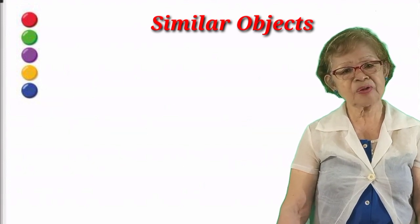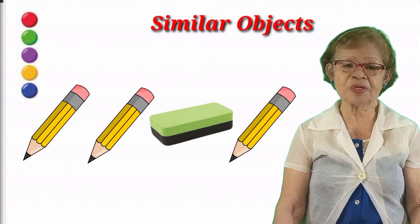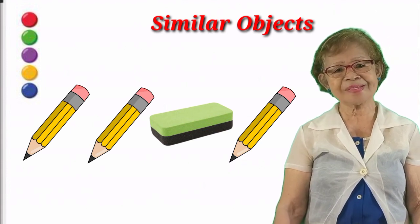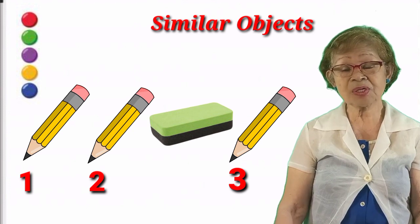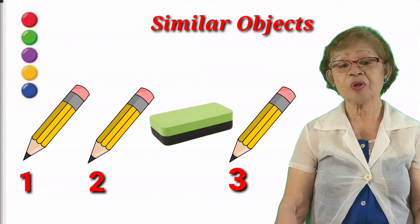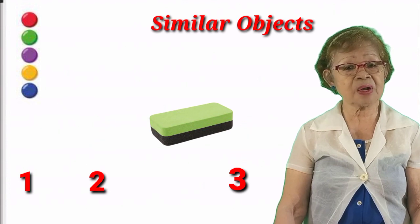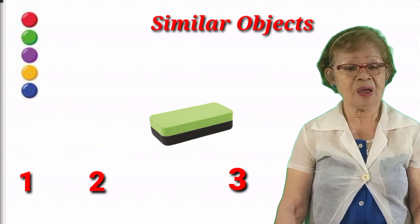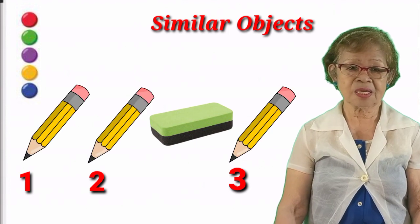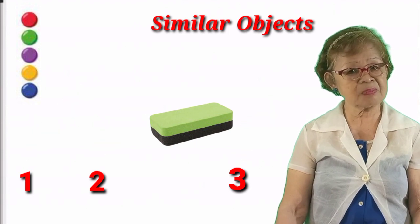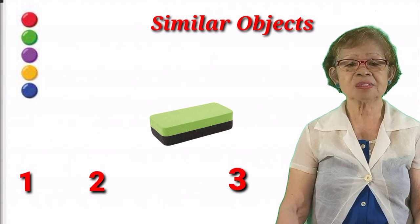We go again to another example. We have three pencils that are yellow — one, two, three. But there is an eraser, which is not similar. The three pencils that are yellow are similar objects, and the eraser is not similar with the pencils. So we finish our similar objects.